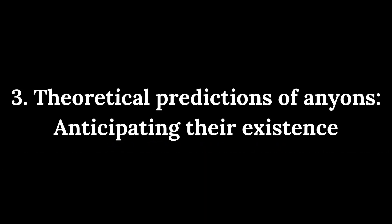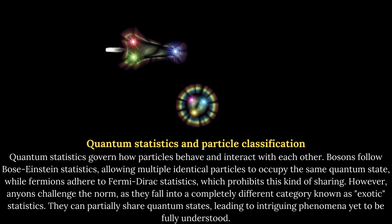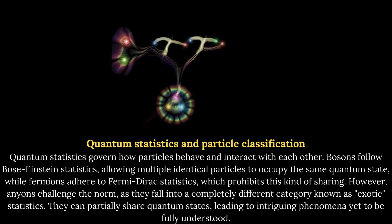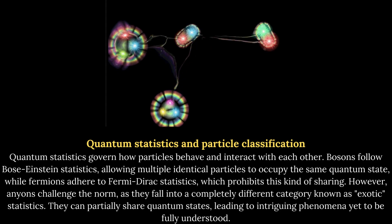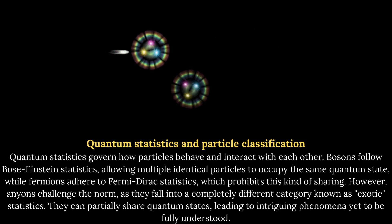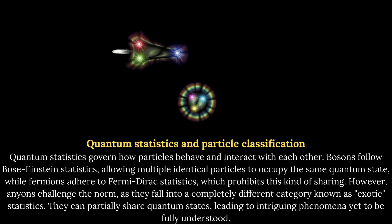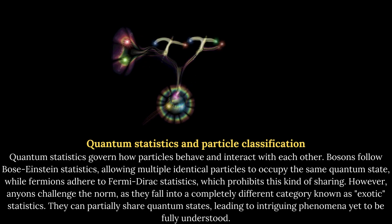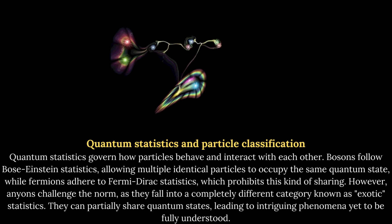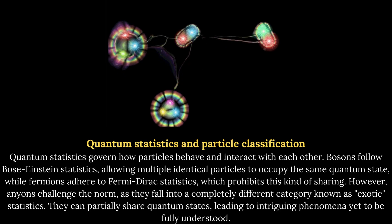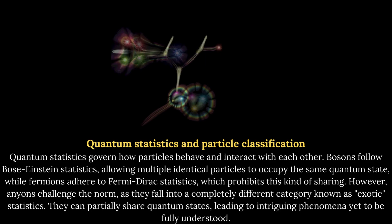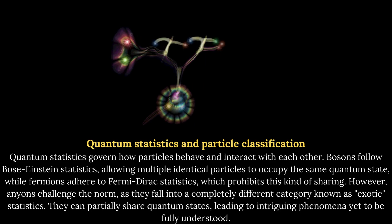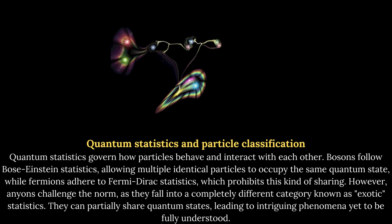Theoretical predictions of Anyons: anticipating their existence. Quantum statistics govern how particles behave and interact with each other. Bosons follow Bose-Einstein statistics, allowing multiple identical particles to occupy the same quantum state, while fermions adhere to Fermi-Dirac statistics, which prohibits this kind of sharing. However, Anyons challenge the norm, as they fall into a completely different category known as exotic statistics. They can partially share quantum states, leading to intriguing phenomena yet to be fully understood.